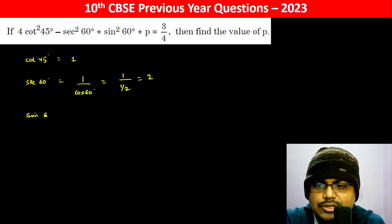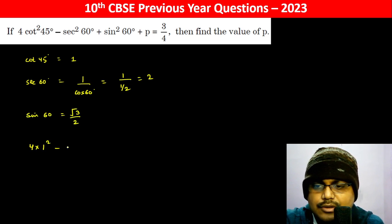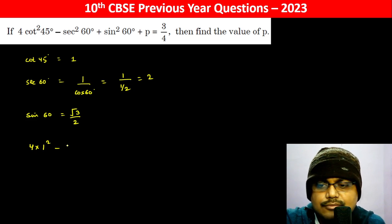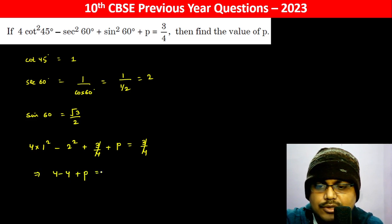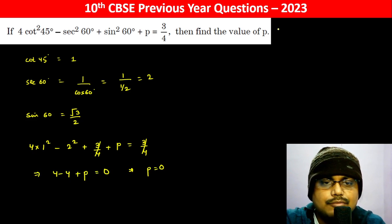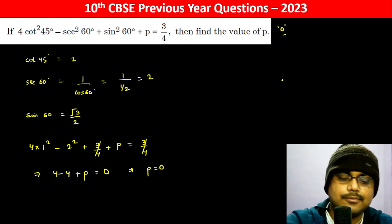sin(60°) is √3/2. Substituting: 4·(1)² - 2·(2)² + 3/4 + p = 3/4. This gives 4 - 4 + p = 0, so the value of p is 0.